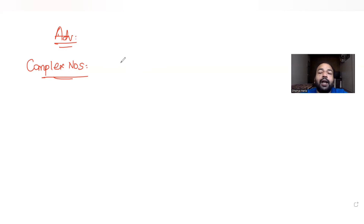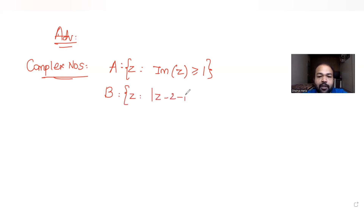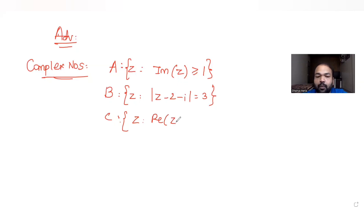The question says: let A, B, C are three sets of complex numbers defined as follows. Set A is defined as z such that the imaginary part of z is greater than 1. Set B consists of complex numbers z where mod of (z minus 2 minus i) is equal to 3. And set C is defined as z where the real part of z times (1 minus i) equals root 2.